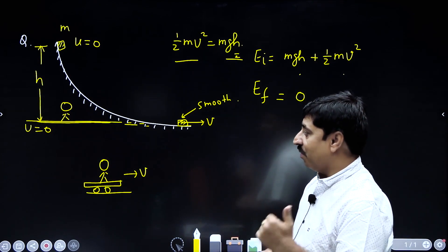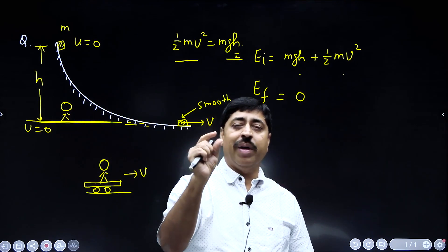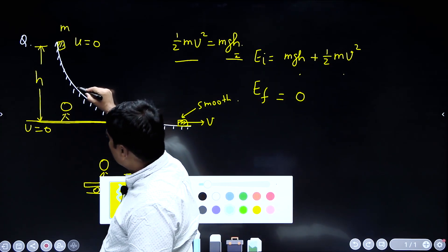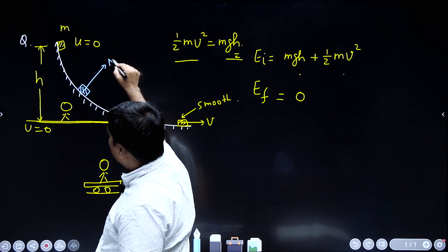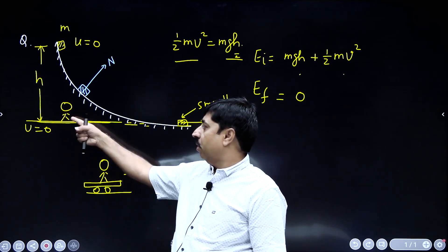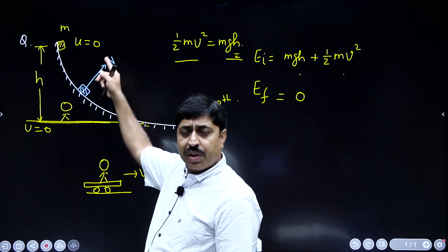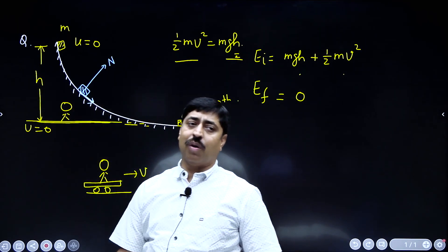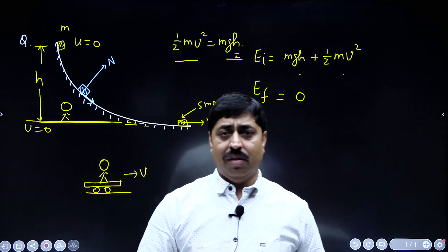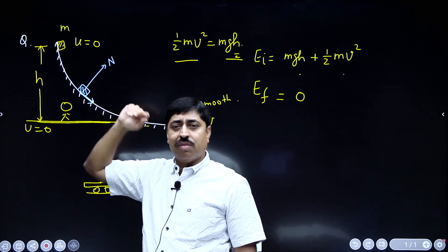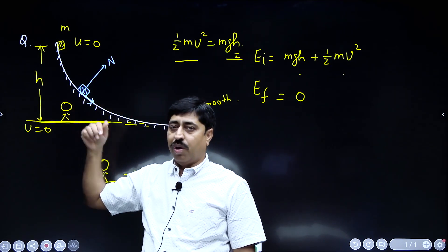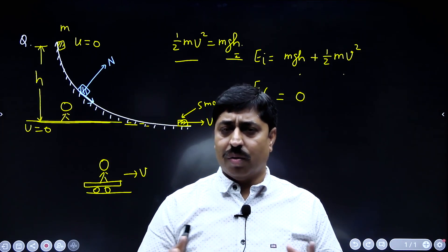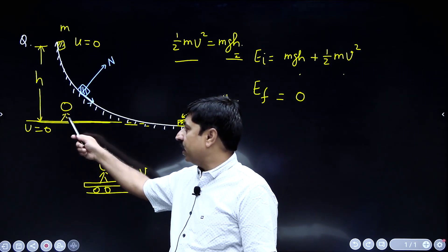In the ground reference frame, the only force performing work on the block is Mg, the gravitational force. The normal force that acts on the block while it is sliding does not perform any work on the block as observed by the ground observer, because the normal reaction is always perpendicular to the track. If you consider a very small displacement of this block on the track, that small displacement is tangential. So for any small displacement of the block, the work done by the normal force is 0. In short, the velocity of this block is always perpendicular to the normal force, and therefore the normal force does not deliver any power — it does not perform any work.